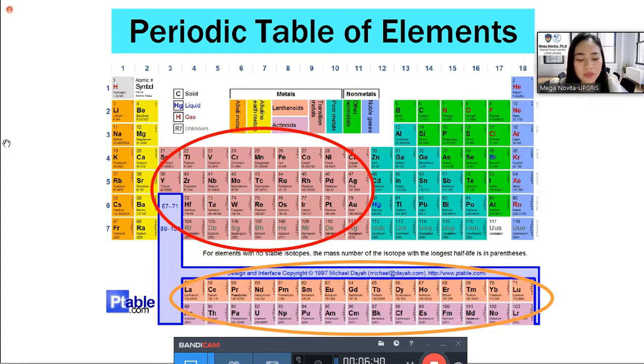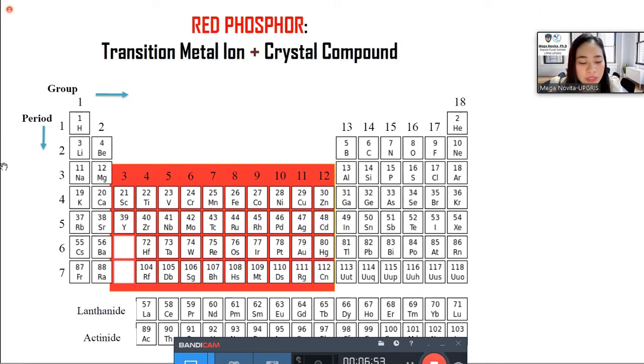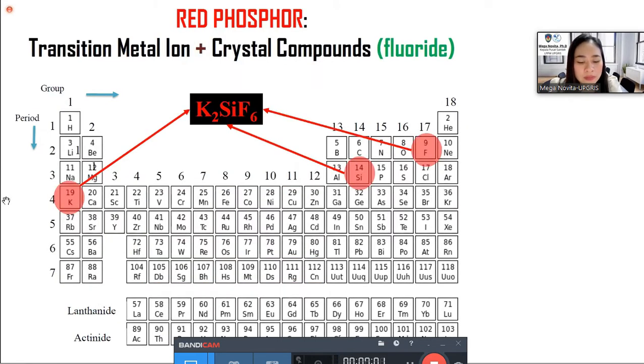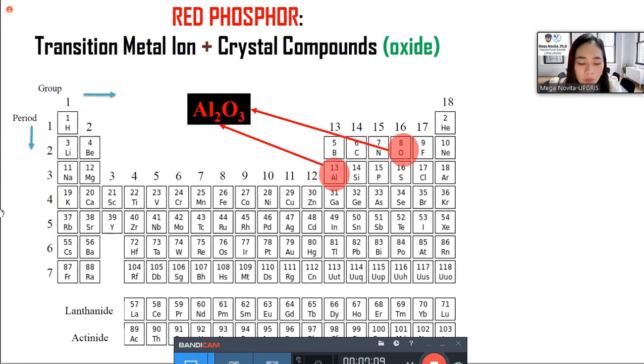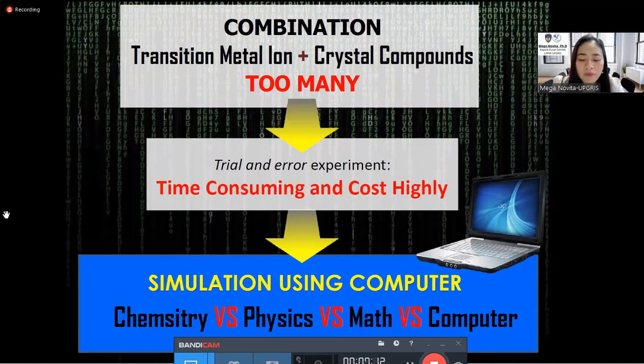Then, because of that, many researchers are trying so hard to find the suitable materials for the red phosphor used in white LED. We mostly concentrating on the transition metal and rare earth ions. We actively activated those transition metal ions in host crystal compounds. For the host crystal of fluoride compounds, such as K2SiF6, or in oxide compounds, compounds like Al2O3. You can imagine in this world, the combination of dopant and host crystals are actually too many. Since the trial and error experiments are rather ineffective, time consuming, and cost highly, therefore, simulation using computer is really helpful. It is also very fortunate for me as well, because in my university, we don't have enough tools to do experiment. That is why simulation is the best option for my research.